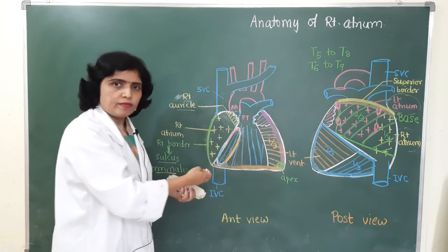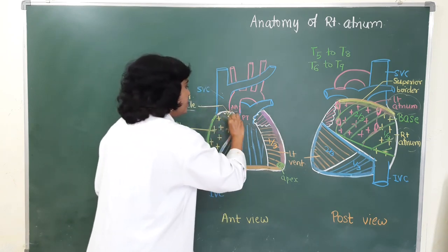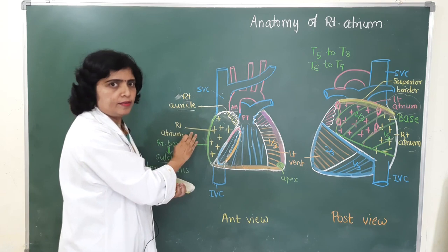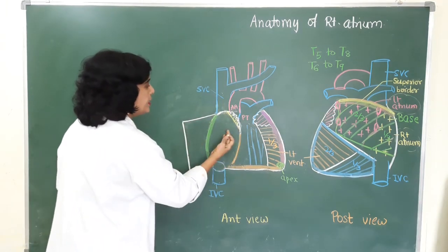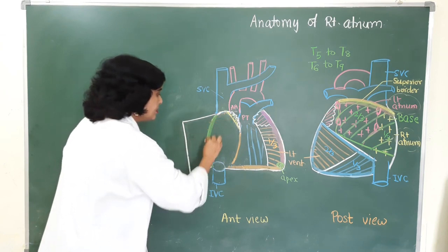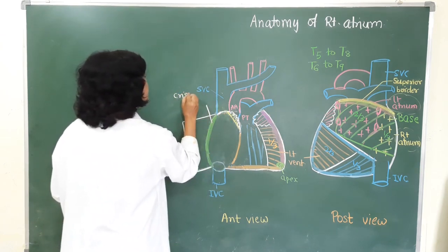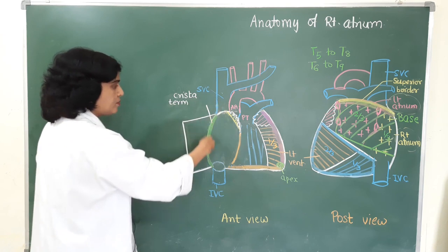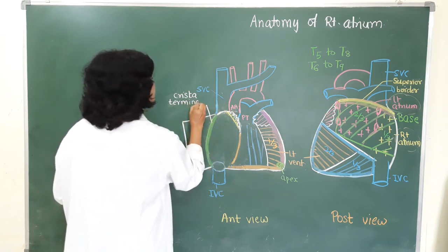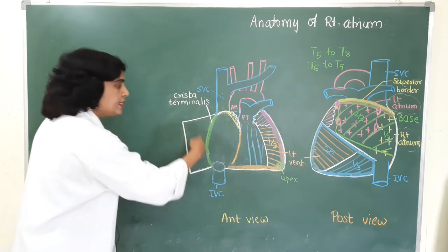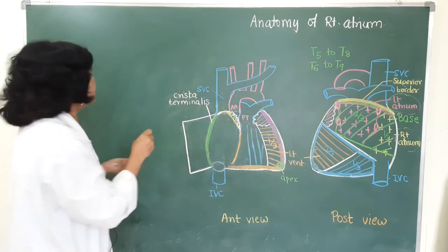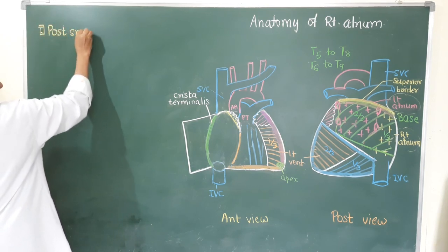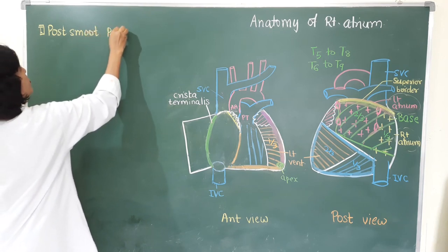To see the interior of the right atrium, we cut open the anterior wall and reflect it laterally. The interior of the right atrium is divided into three parts: the posterior smooth part, also called the sinus venarum, the anterior rough part, and the septal wall. The crista terminalis separates the posterior smooth part from the anterior rough part.